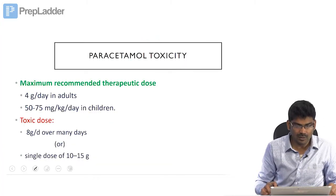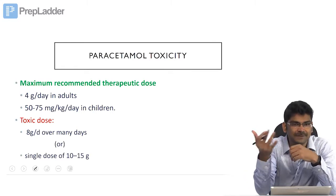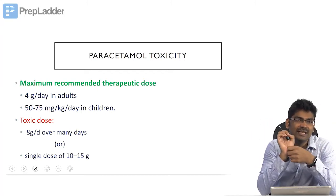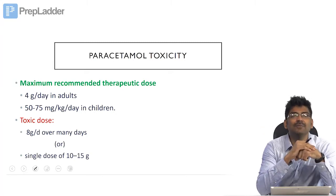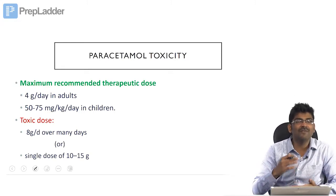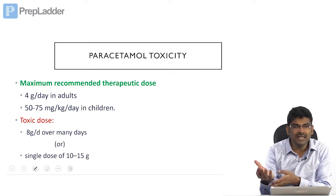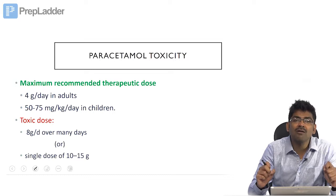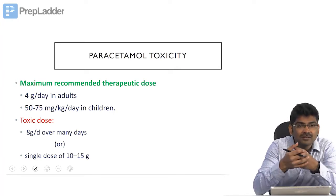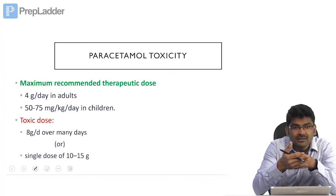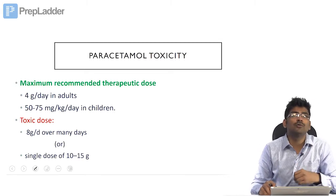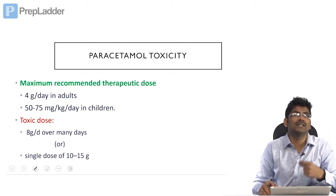Now let us go to paracetamol toxicity. The maximum recommended therapeutic dose is 4 grams per day in adults, and 50 to 75 milligrams per kilogram per day in children. Toxic symptoms develop when 8 grams per day is given over many days, or a single dose of 10 to 15 grams is given. The toxicity features are nausea, vomiting, and elevated transaminases. We will focus on the biochemical perspective.